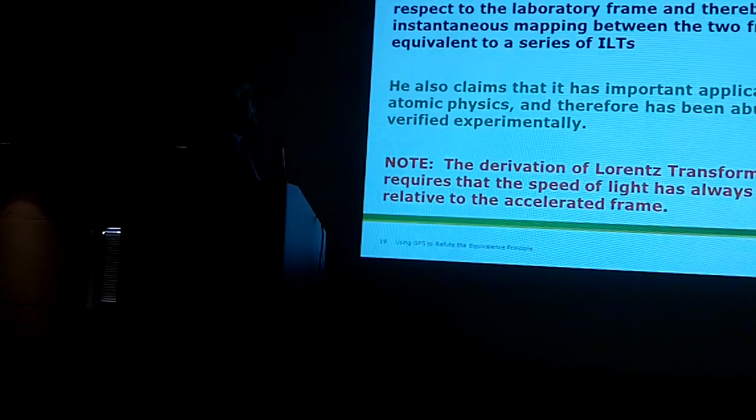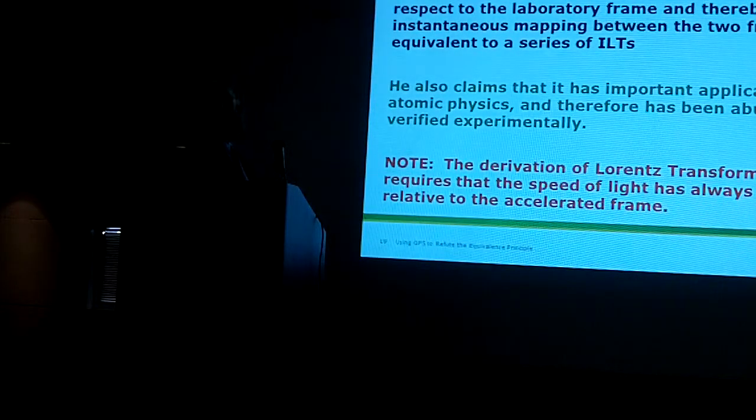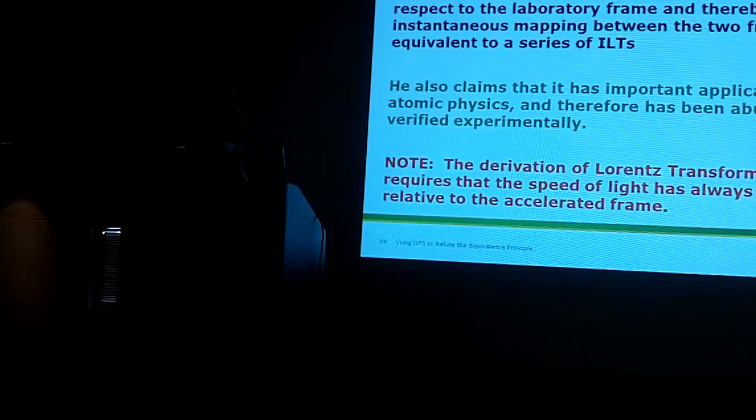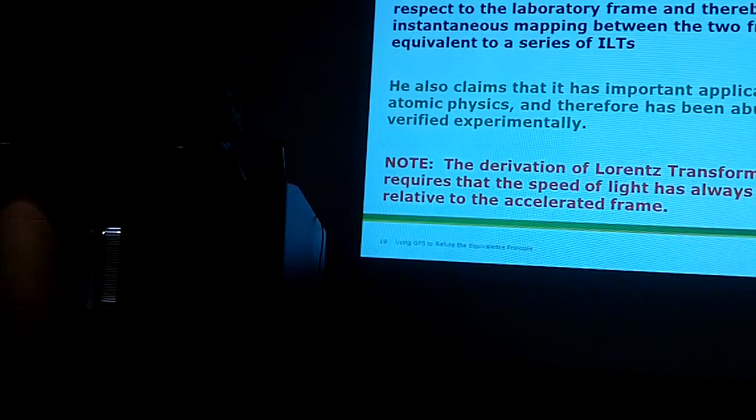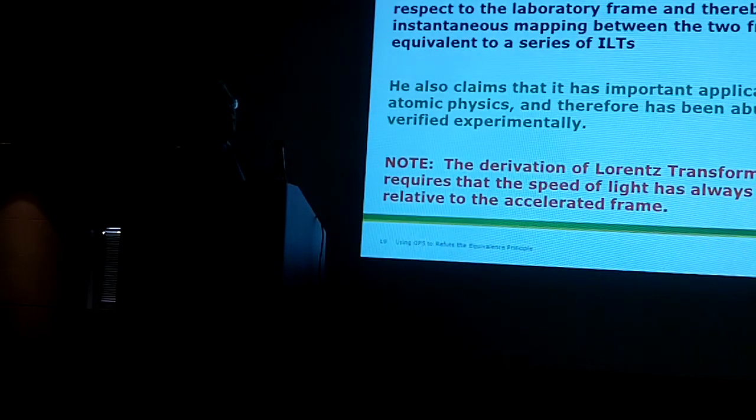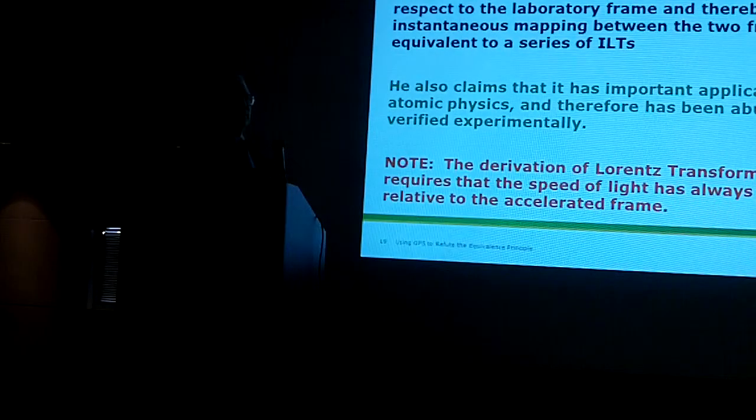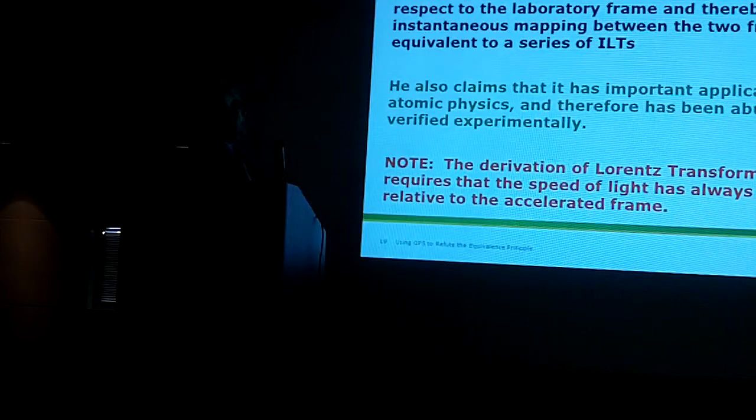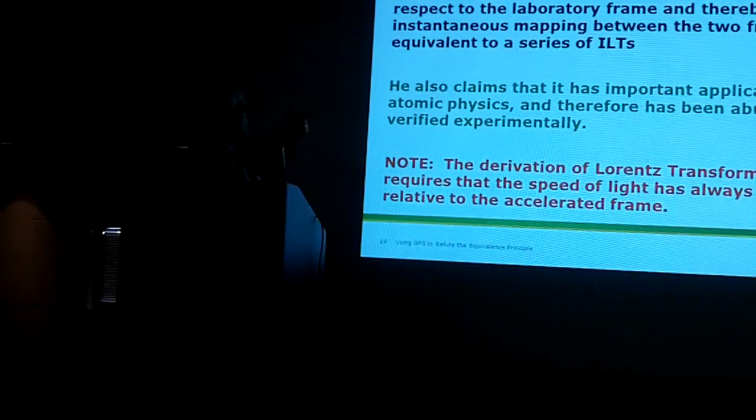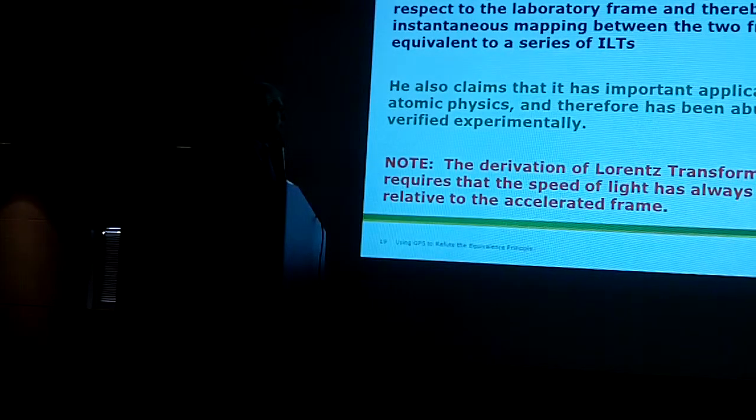Goldstein claims that a particle being accelerated with respect to the laboratory can be linked to the laboratory frame via a Lorentz transformation. The Lorentz transformation instantaneously matches the particle's accelerating frame to a frame moving at a velocity v with respect to the laboratory frame and thereby gives an instantaneous mapping between the two frames. It turns out that's equivalent to an infinite series of infinitesimal Lorentz transformations. What does that do? The primary thing is it keeps the speed of light at C because the Lorentz transformation was derived as a way to force the speed of light being C in every inertial frame you're working with. He claims it has important applications in atomic physics, but that's primarily based on the Thomas precession effect, which it's used to explain, and we'll look at that briefly.